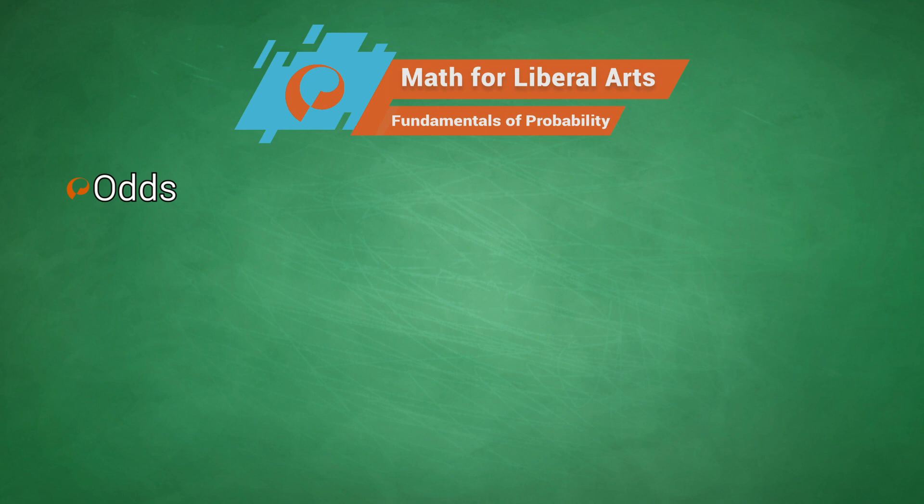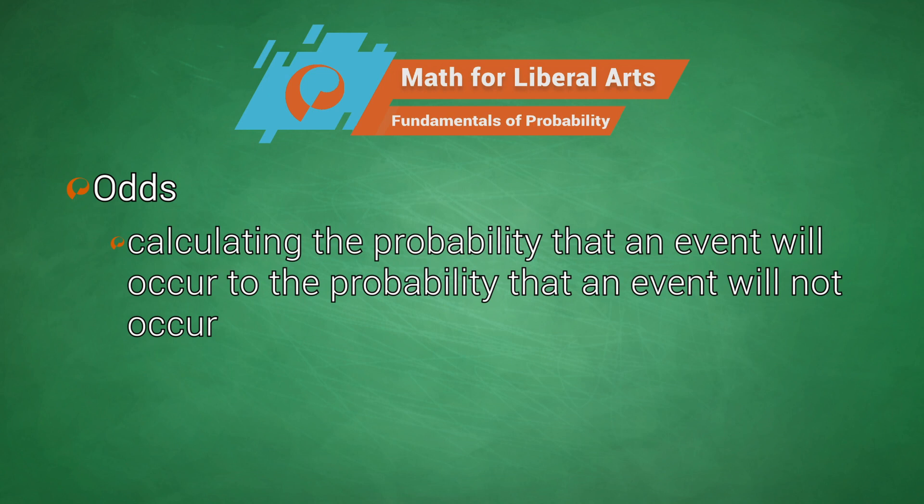Sometimes people will want to know the odds of an event happening. When you calculate odds, you are actually calculating the probability that an event will occur to the probability that an event will not occur.